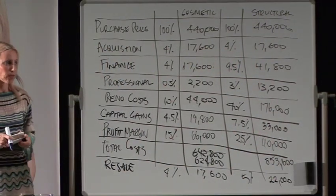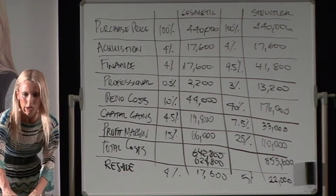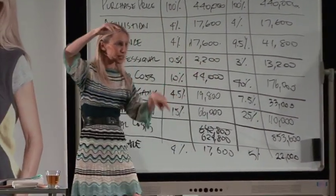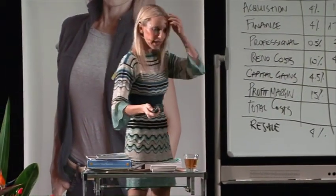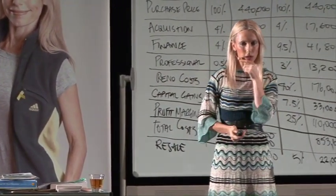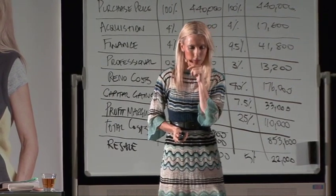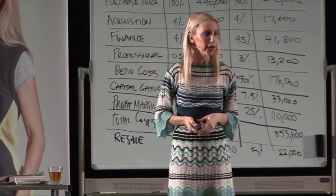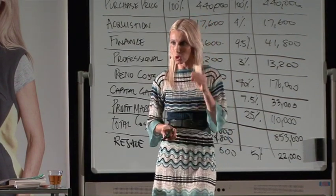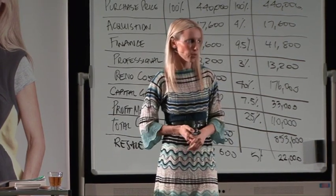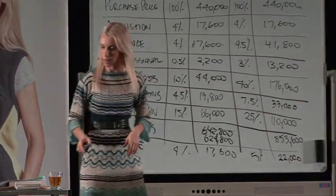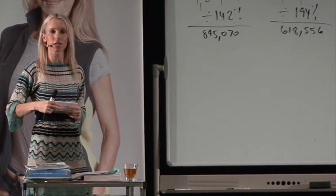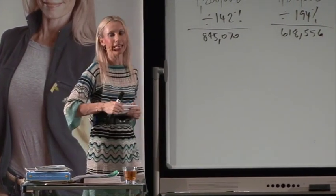That's what I call a high-level feasibility — don't ever buy a property based on that alone. It's just a quick high-level tool, and if it gets past that first check, you move into property due diligence mode. For the purchase price calculator exercise: if houses in your area sell for $1.2 million, for a cosmetic renovation you should be paying $845,070, and for a structural renovation $618,556.